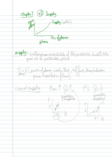The supply curve, which represents the seller, tells us the willingness and ability of the producer to sell the good at a particular price.